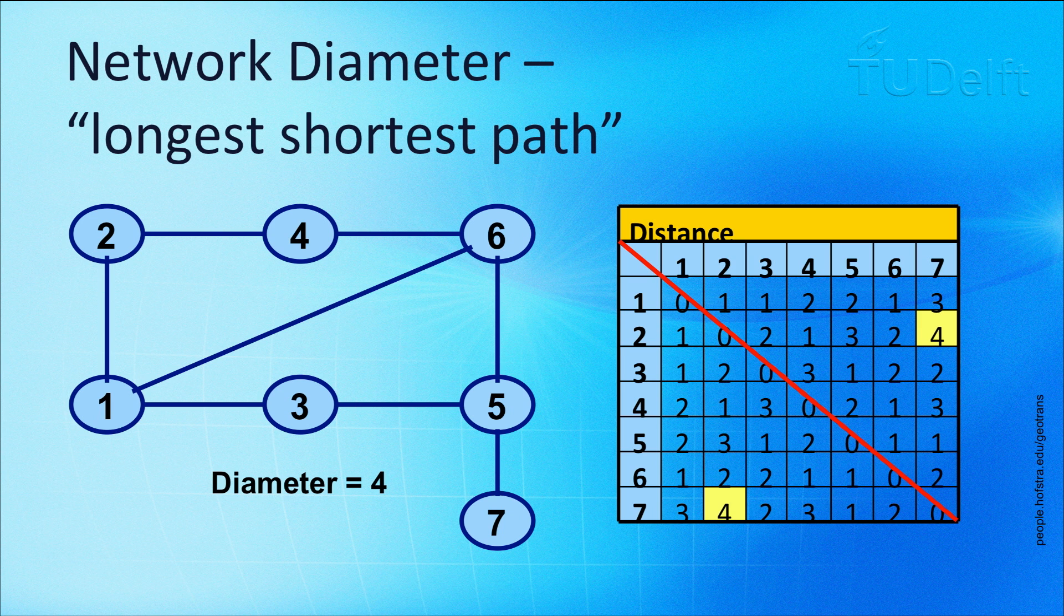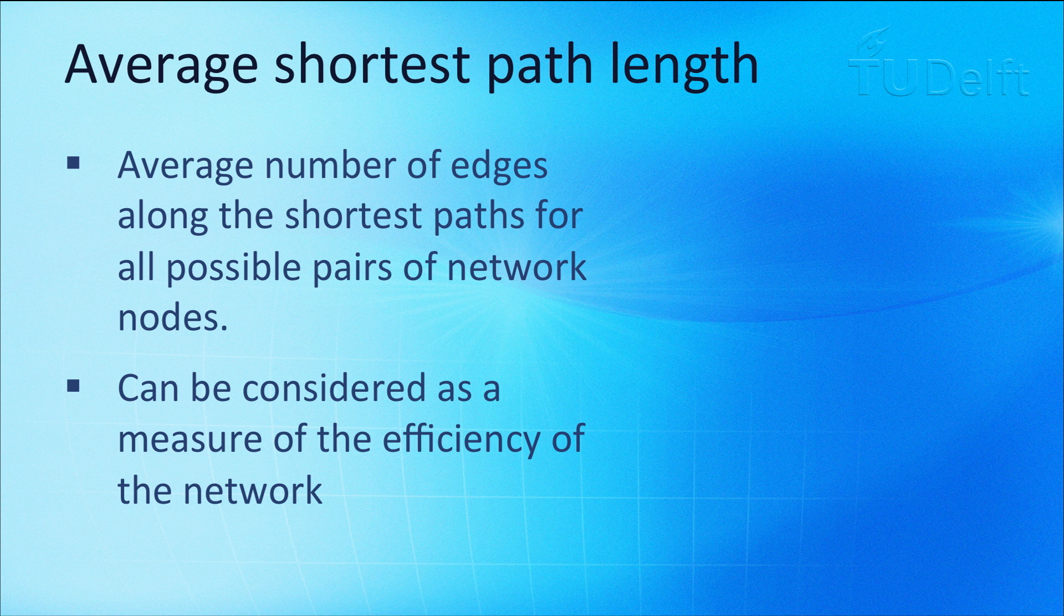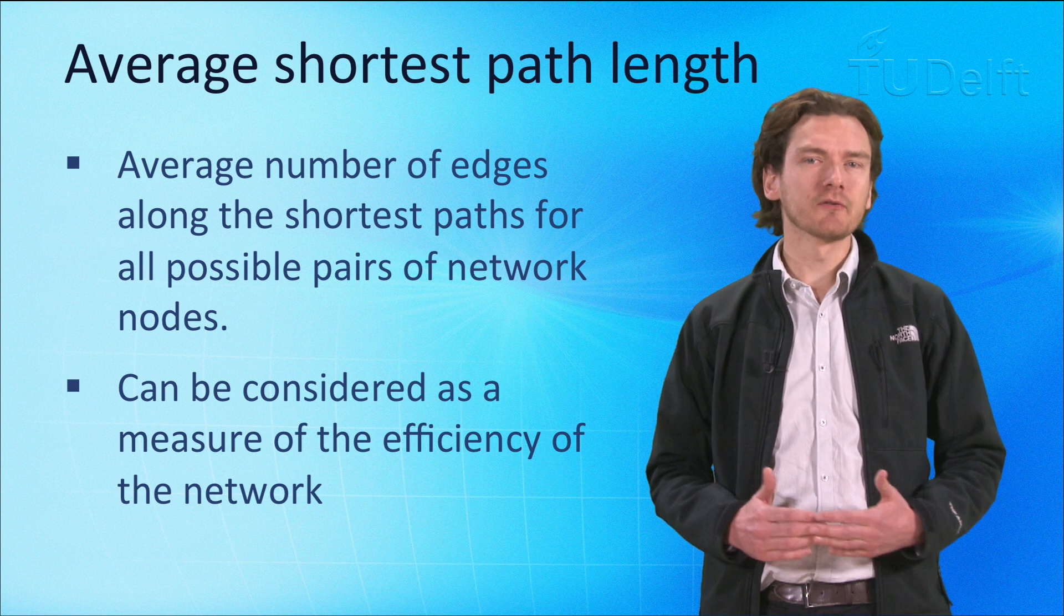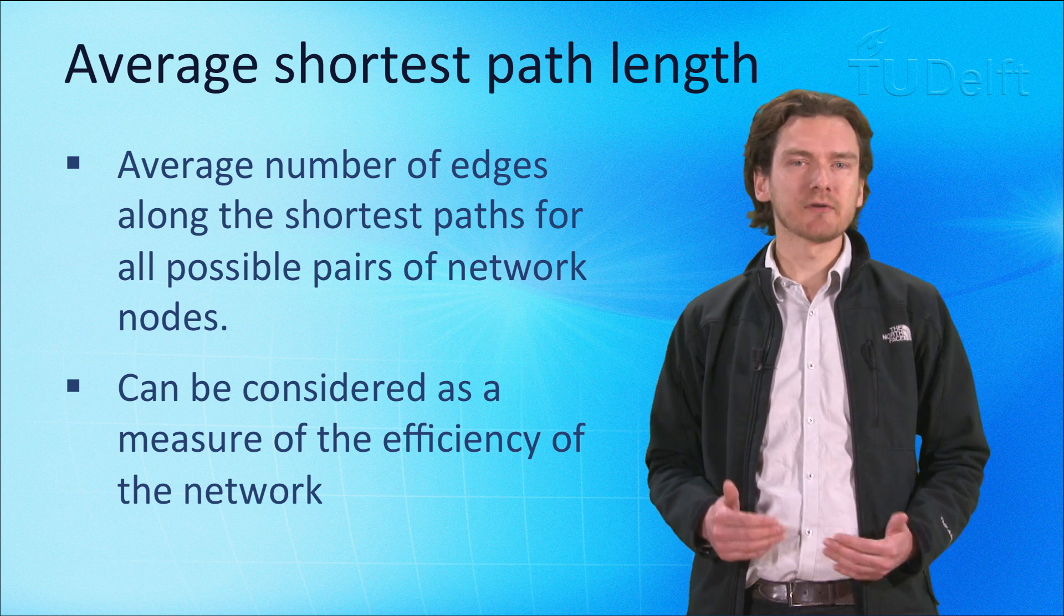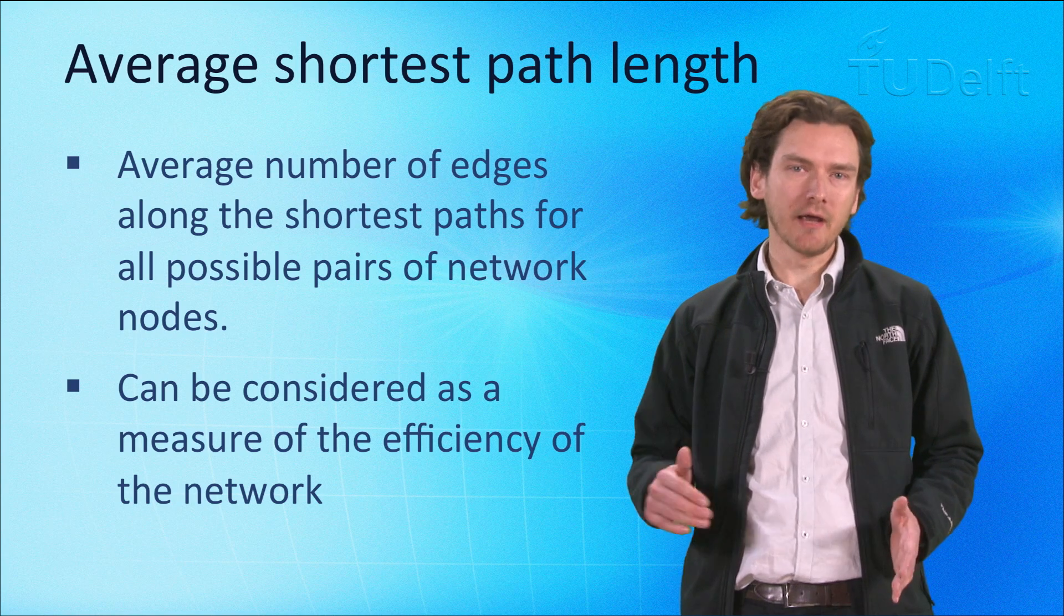In this case, the network diameter is 4, since the path from node 2 to node 7 involves the most number of edges traversed. You can also take the same data about the shortest paths, and then take the average of these. You can consider this as a measure of the efficiency of the network, since it indicates on average how long it would take to go from any node to any other node.